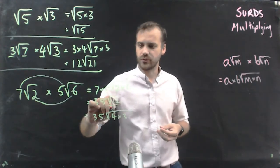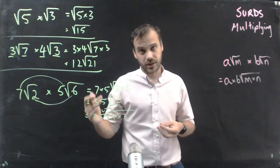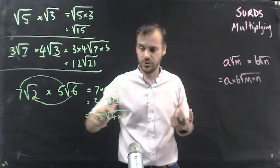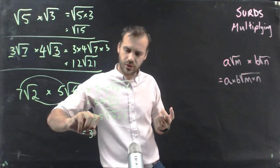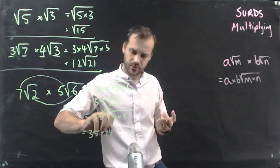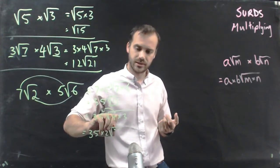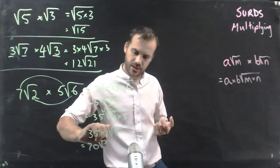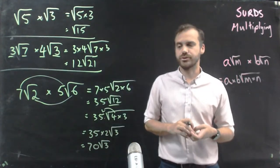And we can move the 4 outside. And when the 4 moves outside it becomes the square root of 4, which is 2. 35 times 2. And the 3 is the thing that's left over. The answer here is going to be 70 root 3.